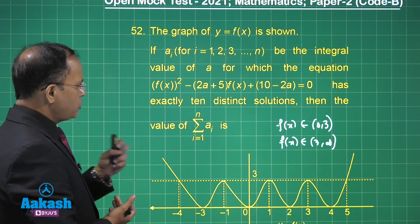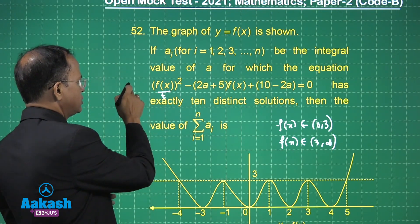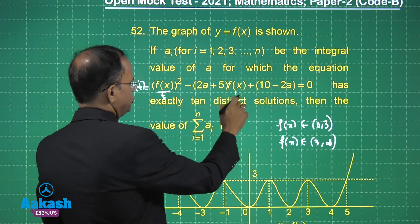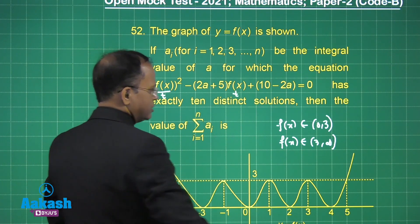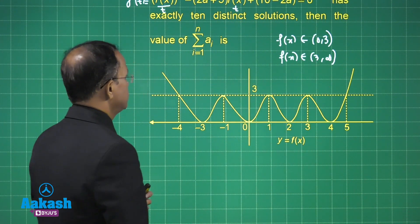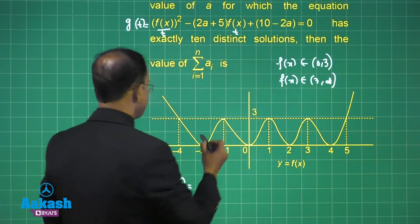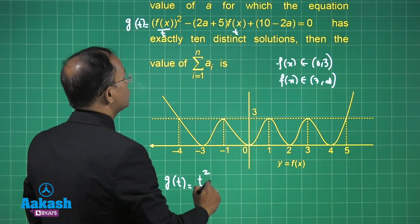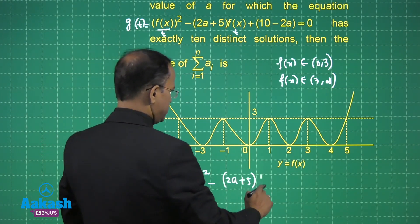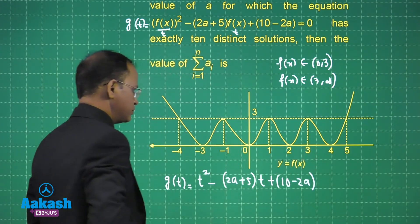Now what we can do, we can take f(x) to be t. Let me define this as g(t), where t = f(x). So g(t) is equal to t² minus 2(a+5)·t + 10 - 2a. This has been given to you.